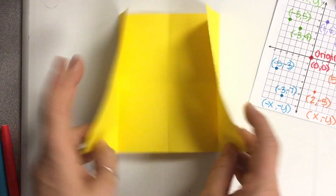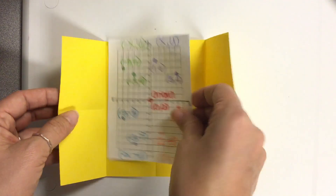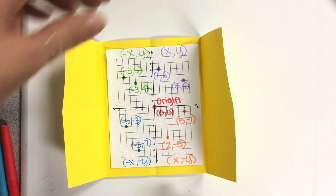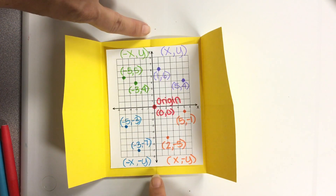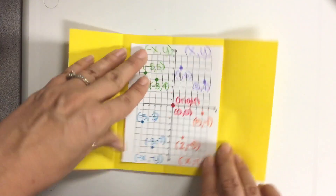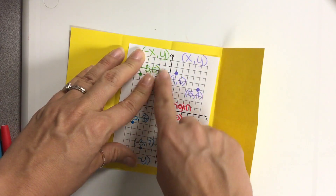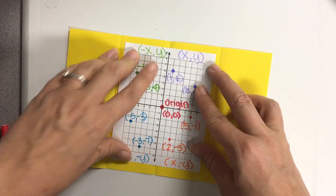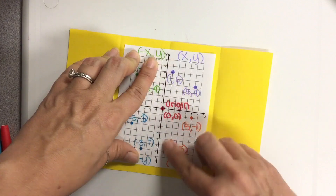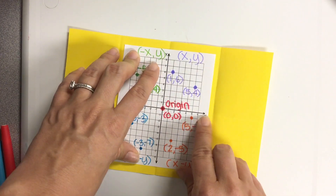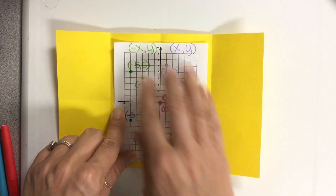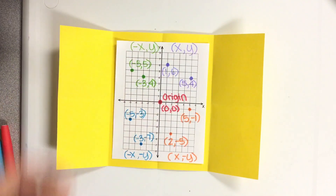We are going to glue the grid in the middle — be very careful. You need to put your y-axis directly connected to the fold lines, with the top arrow and the bottom arrow connected to it. Also, the x-axis should be aligned with those folds when you glue it down.